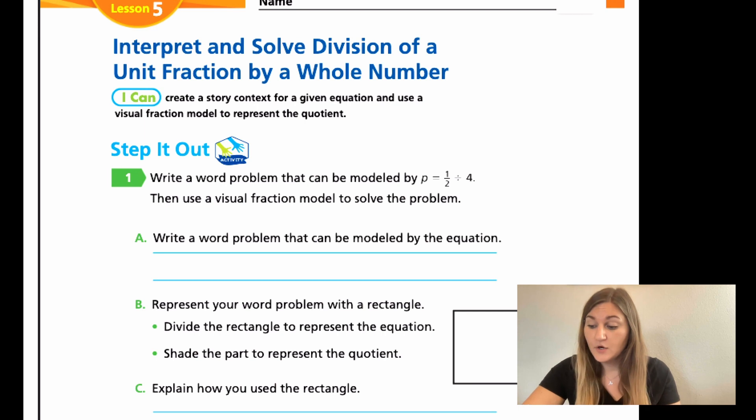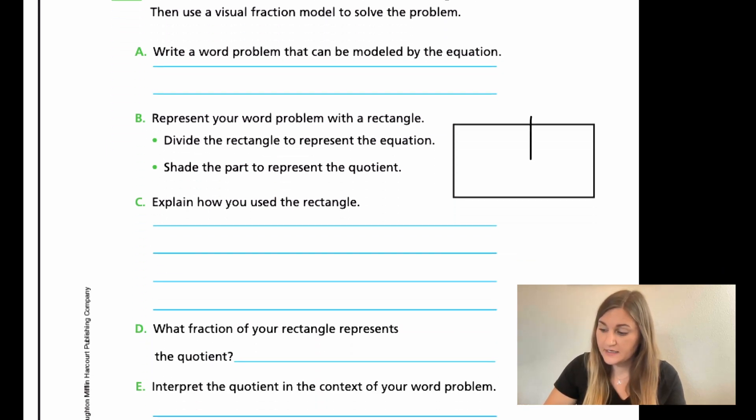So, for B, represent your word problem with a rectangle. And it gives us that rectangle already. So, it says divide the rectangle to represent the equation. So, I need to start with a half. So, I'm just going to go ahead and split my rectangle right in half. Then, I need to take that half and I need to divide it by four.